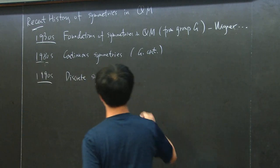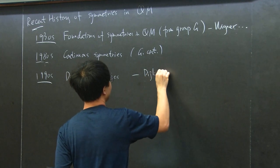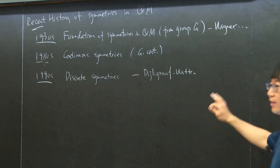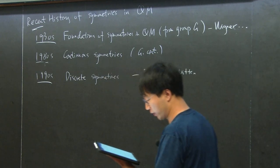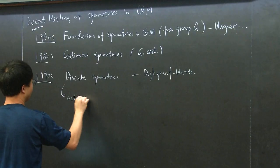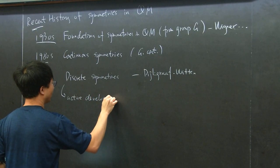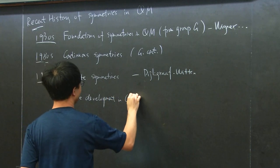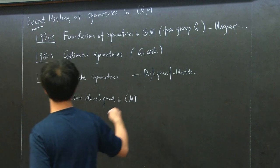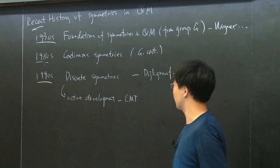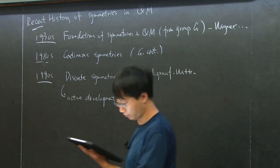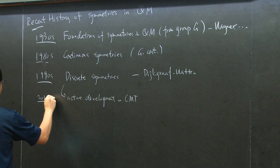Shortly after, perhaps not well appreciated at the time, was the discussion of discrete symmetries — a generalization of continuous symmetries associated with continuous groups to the case when the group is generally discrete. This started from the paper of Dijkgraaf and Witten around this time. It was not as much appreciated in the high-energy community when first published, but it spurred active development in the condensed matter community, because discrete symmetries naturally show up as symmetries of lattice systems, around the 2010s.